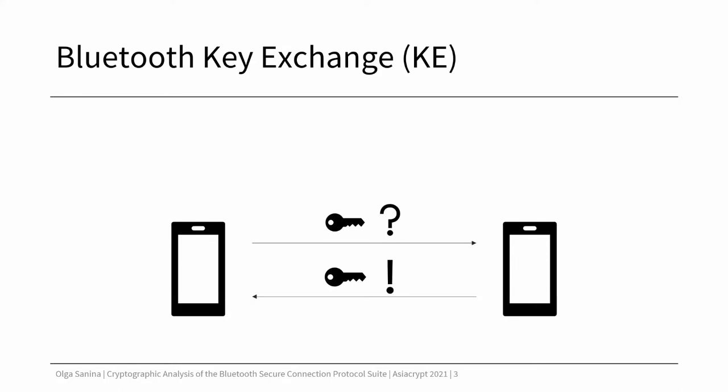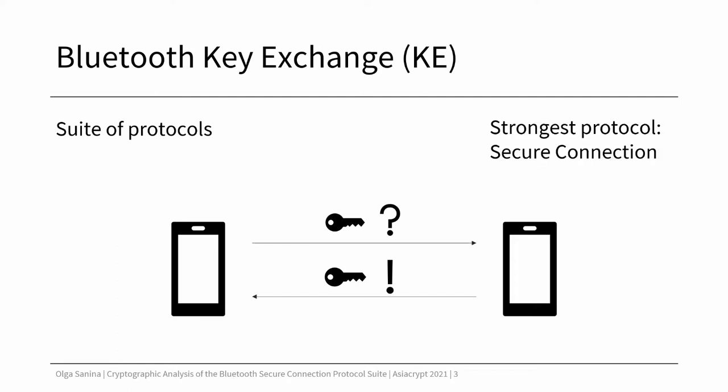To encrypt the data between two devices, they first need to establish a key. In Bluetooth, there is a bunch of protocols for key exchange with different levels of security, and the strongest one is called secure connection.